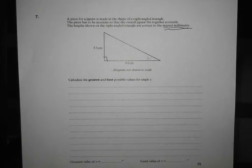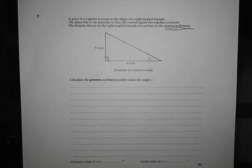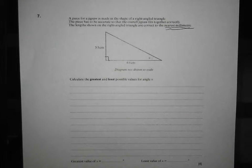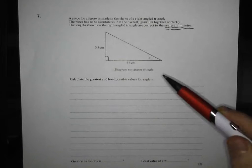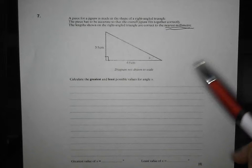Calculate the greatest and least possible values for angle x. Right, so what we've got here in disguise is an upper and lower bounds question wrapped up together with a bit of trigonometry. Now we've got to remember a few things here about how we get things as big and as small as possible. Well, before we worry about that, let's get the trig side of it sorted and see what we're working with here.